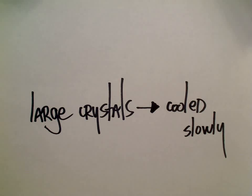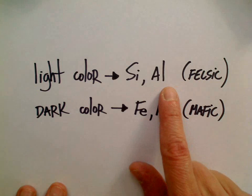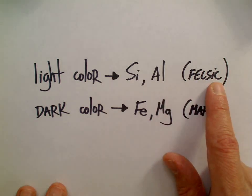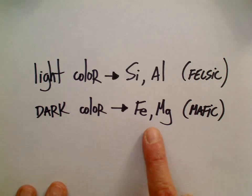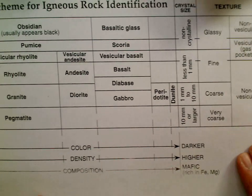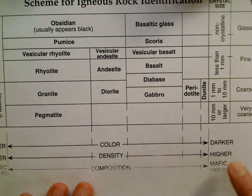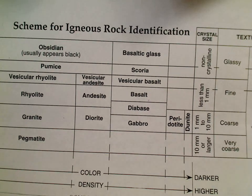The key thing to remember is that large crystals mean the rock cooled slowly. Color also tells you something: light-colored igneous rocks have a lot of silicon and aluminum and are called felsic rocks — they're on the left side of the reference table. Dark-colored rocks have minerals with more iron and magnesium and are called mafic rocks — on the right side. Felsic is light color, mafic is dark color. Thanks for watching — I hope that's a good intro to igneous rocks.